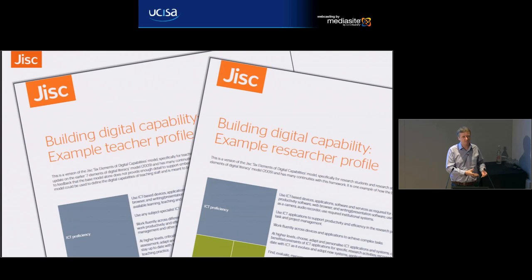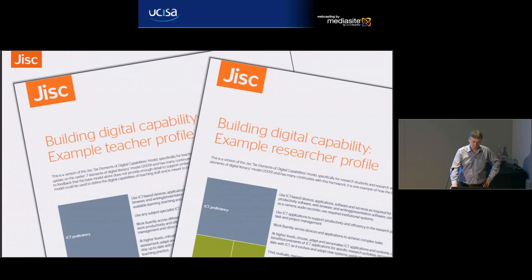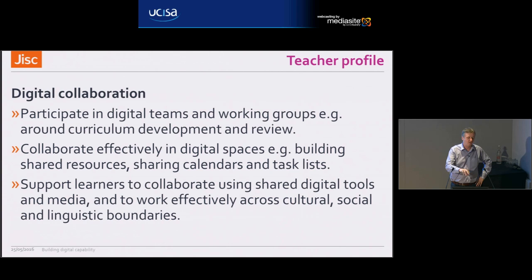By having a consistent framework, we can write and share profiles that allow us to identify what skills and competencies are required at different levels. Just to give you an idea of what we talk about: digital collaboration is about using shared digital tools, being able to work effectively across different kinds of boundaries. When we talk about digital innovation for researchers, again these are just outlines — this isn't saying this is the right way or the wrong way. It's an example.